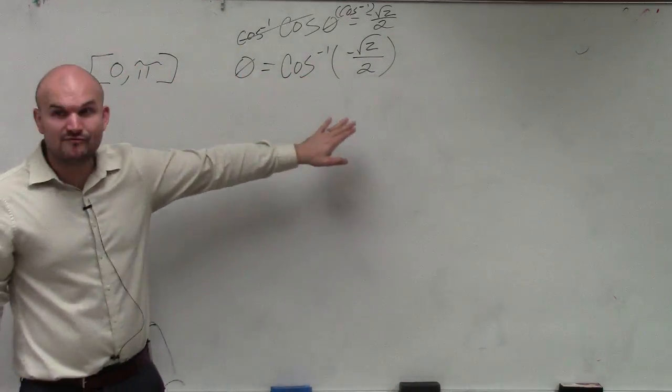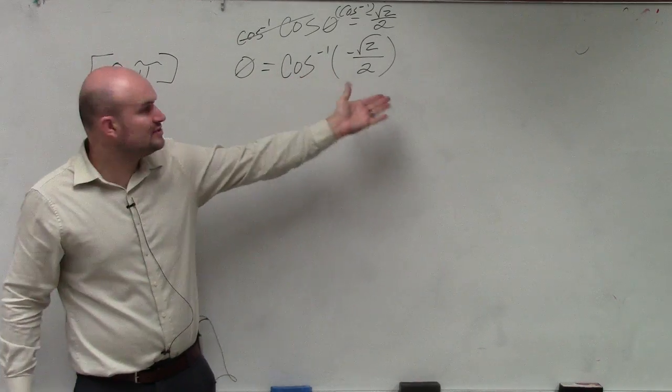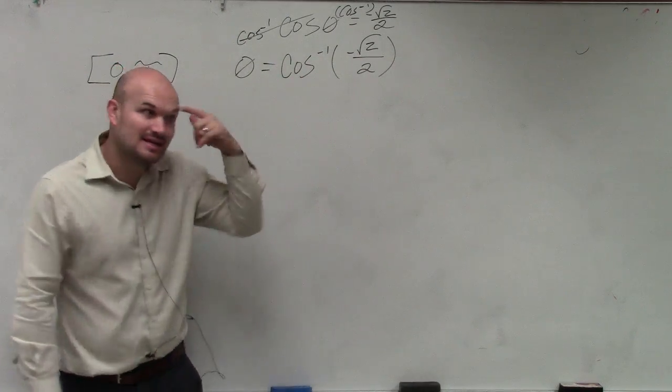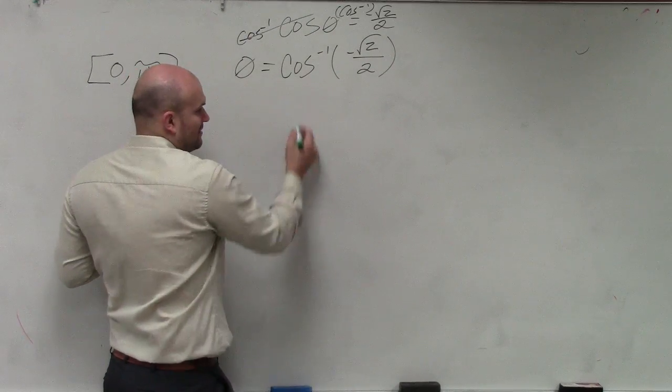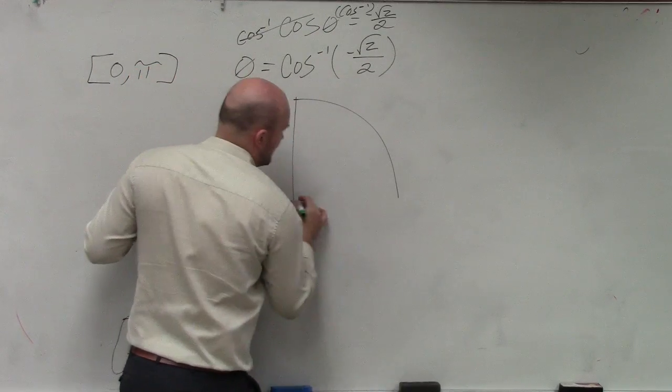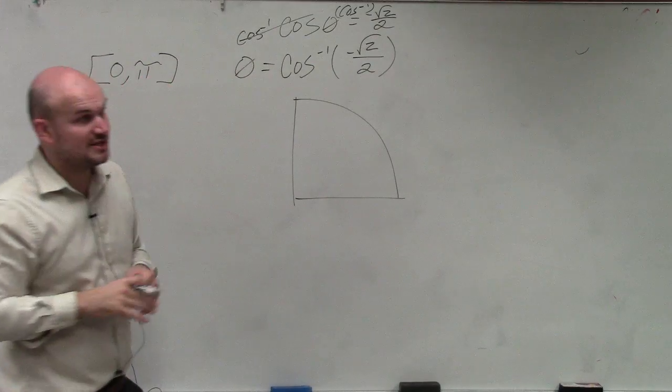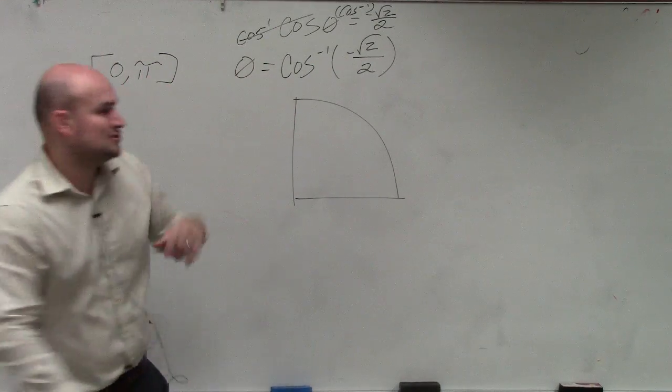So if I want to find the inverse, which angle produces negative square root of 2 over 2? Now, let's think about this. Well, it's negative, right? So I told you guys to draw that unit circle. If you go ahead and use that circle, you know cosine represents that x-coordinate, right?